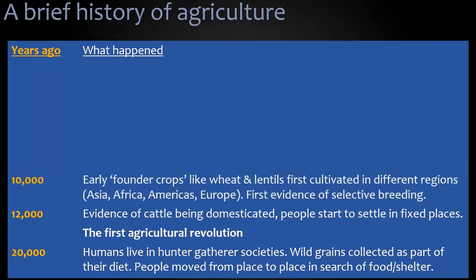10,000 years ago was the first evidence of what we call the early founder crops, like wheat and lentils, being cultivated in different regions of the world. This happened simultaneously almost in Asia, Africa, the Americas, and parts of Europe. And it's the first evidence we see of selective breeding, where people took different varieties of wheat and bred them together to produce better, stronger, healthier, or more productive wheat.